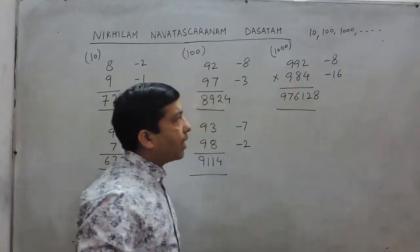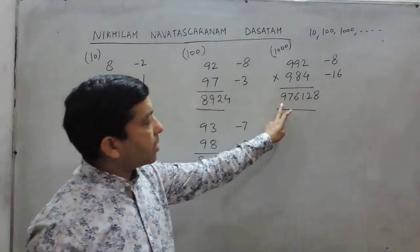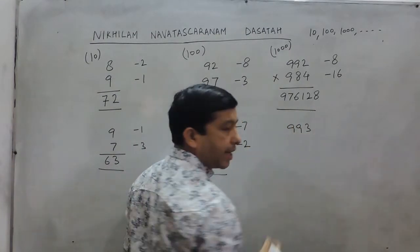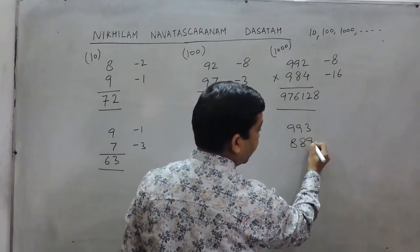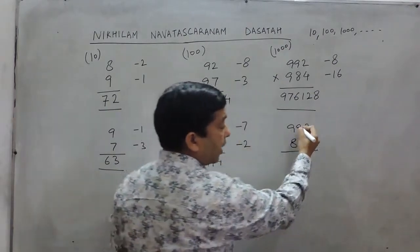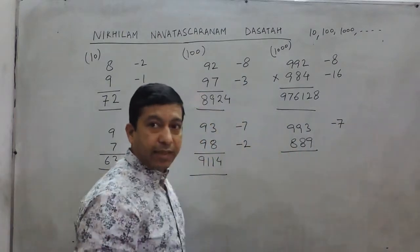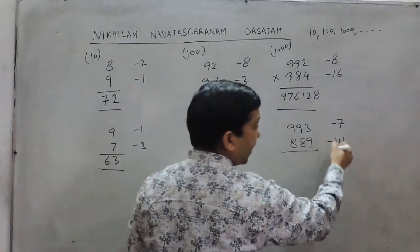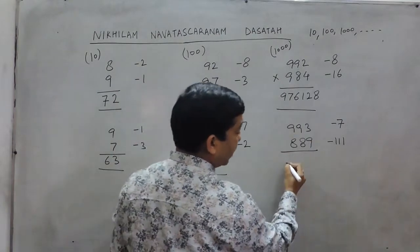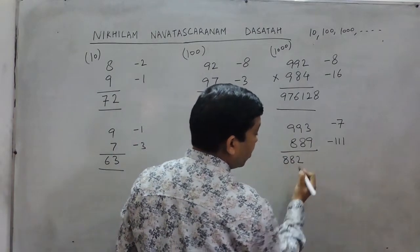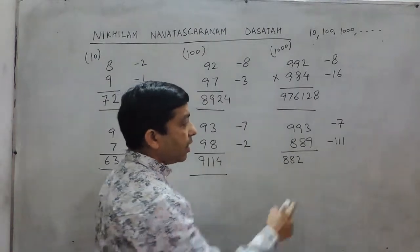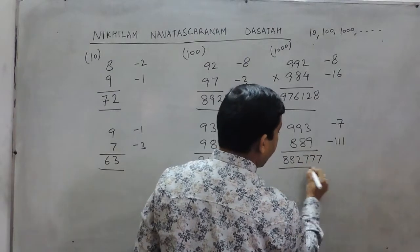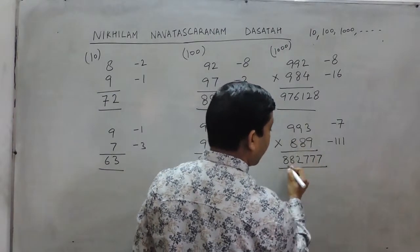So the multiplication of 992 by 984 becomes 976128. Now suppose we multiply 993 by 889. The difference of 993 with 1000 is 7. The difference of 889 with 1000 is 111. So 7 and 111 add up to 118. If we subtract 118 from 1000, it becomes 882, which are the first 3 digits of the answer. Then 111 multiplied by 7 becomes 777, which are the last 3 digits. So the multiplication of these two numbers becomes 882777.